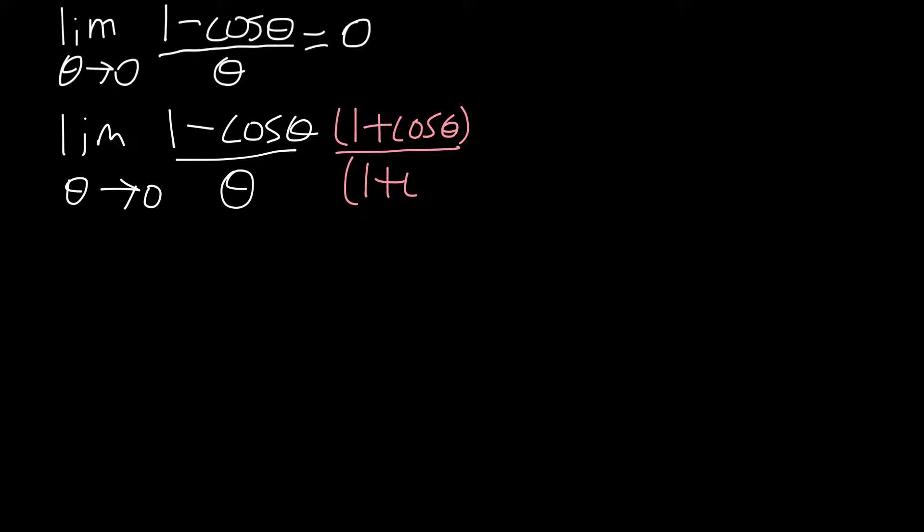Now, 1 plus cos theta is going to help us because 1 and 1 will multiply to give 1. Since this is the conjugate, we'll have minus cos theta times 1, and we'll have 1 times positive cos theta cancelling out. And then we'll have minus cos theta times cos theta, giving us minus cos squared theta.